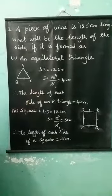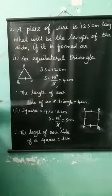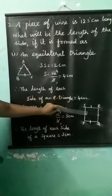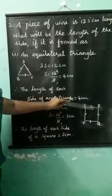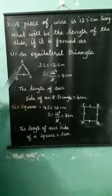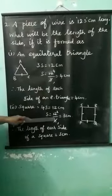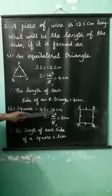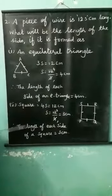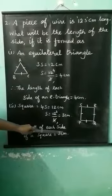Therefore, the length of each side of an equilateral triangle is equal to 4 cm. For the square, 4s is equal to 12 cm. S is equal to 12 divided by 4 is equal to 3 cm. Therefore, the length of each side of a square is equal to 3 cm.